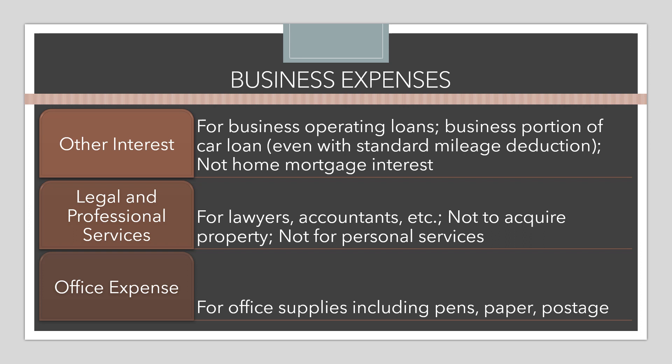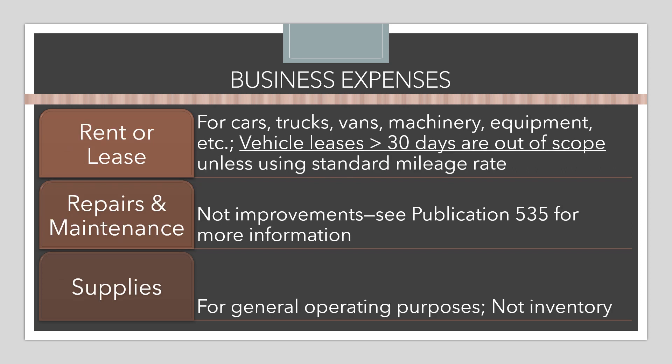Office expense is generally used for office supplies like pens, paper, and postage. Rent or leases can be deducted on a Schedule C — generally for cars, trucks, vans, machinery, and equipment — but there are scope issues with leasing. Any vehicle leases for more than 30 days are out of scope. However, it is possible for the client to take the standard mileage rate based on usage of a leased vehicle; they just will not have any lease expense on this line.